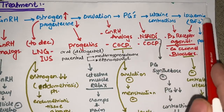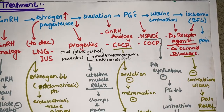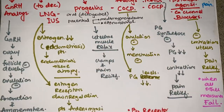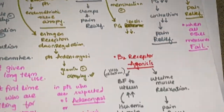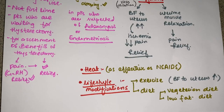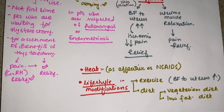Beta-2 agonists act on both uterine contractions and decreased blood flow. Calcium channel blockers inhibit calcium channels, decreasing uterine contractions and relieving pain, but are only used when all other measures have failed. Heat therapy is an old method but equally effective as NSAIDs. Lifestyle modifications include a low-fat vegetarian diet and regular exercise, which increases blood flow to the uterus. That covers primary dysmenorrhea — please like, share, subscribe, and comment. Thank you.